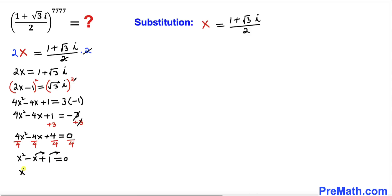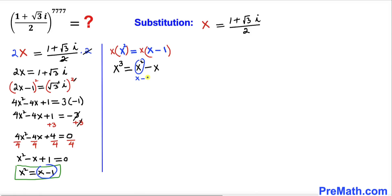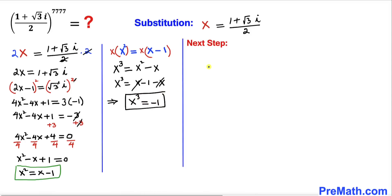Moving the two terms to the right-hand side gives x² = x - 1. Now multiplying both sides by x, the left-hand side becomes x³ = x·(x - 1) = x² - x. Substituting x² = x - 1, we get x³ = (x - 1) - x = -1. Therefore x³ = -1.